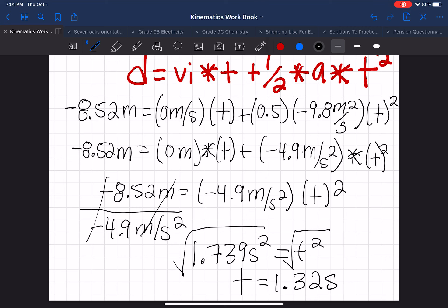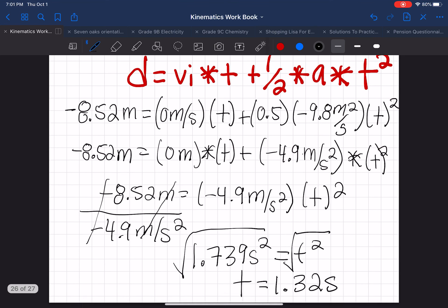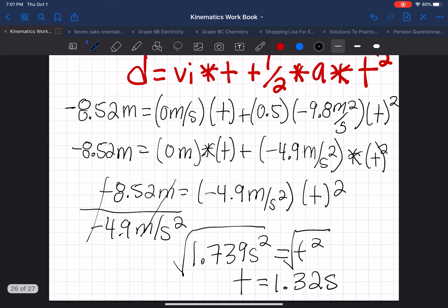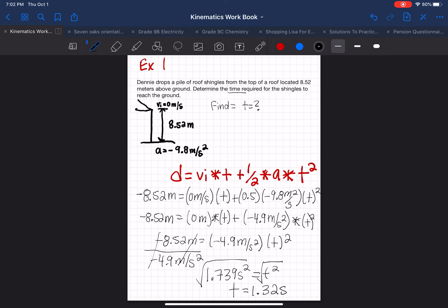And now our last step is to make sure that we're checking the answer, to make sure that it's reasonable and it is accurate. The value does seem reasonable enough, because the shingles are falling from a distance approximately 10 meters off the ground, and it seems that the answer between 1 to 2 seconds is highly reasonable, especially with that acceleration of 9.8 meters per second. So look back at the equation, see if you understand it. Now I'm going to move on to example number 2.